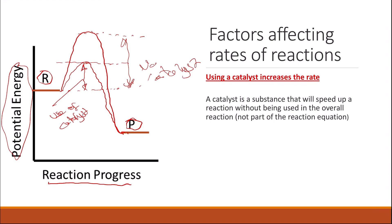A catalyst reduces the activation energy. If we reduce the activation energy, then even though the number of collisions may not change, more of those collisions will be effective. This is how the use of a catalyst increases the rate of the reaction.